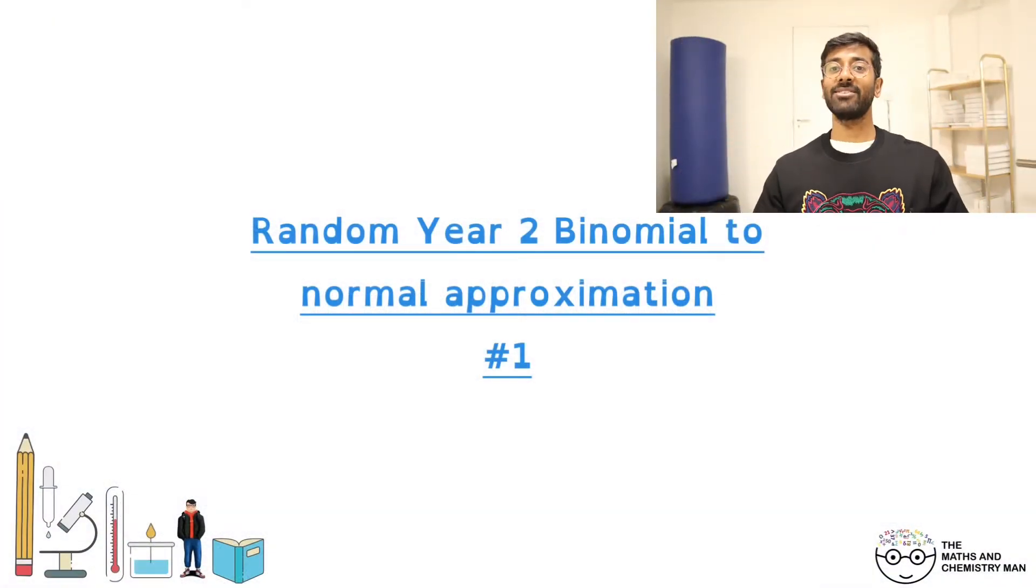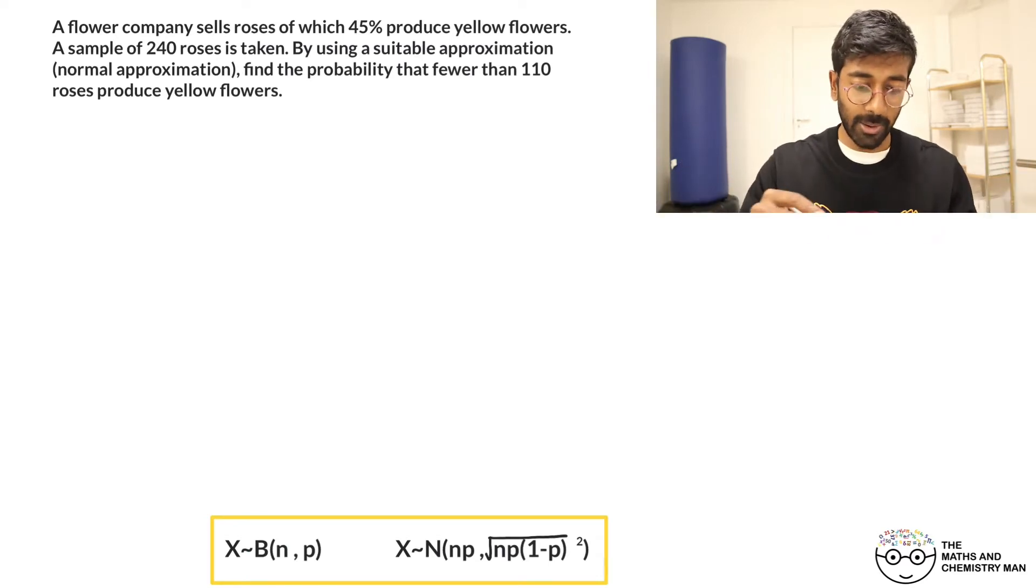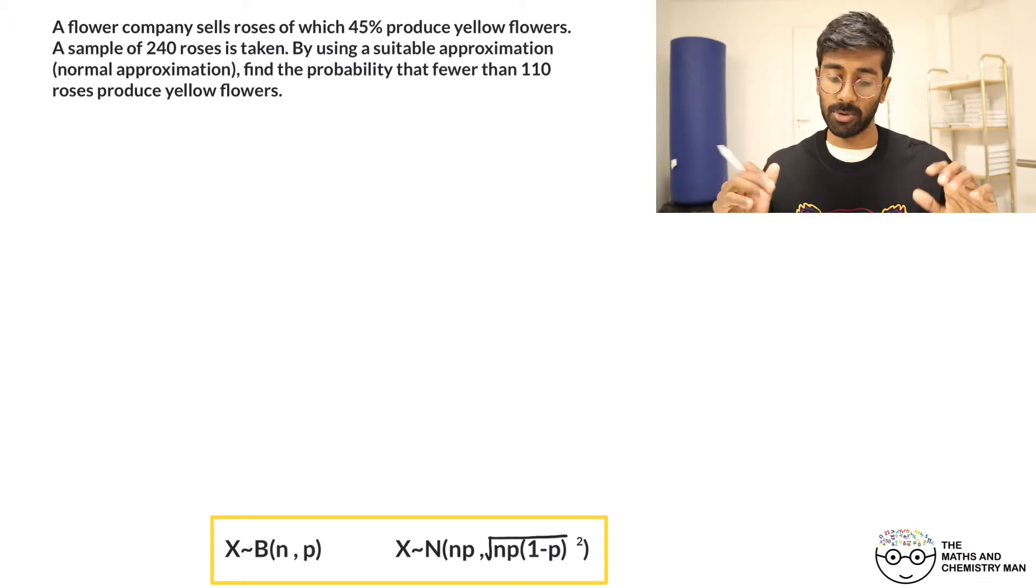We're back with another video, and today we're looking at approximating a binomial distribution to a normal distribution. Here is our question: A flower company sells roses of which 45% produce yellow flowers. A sample of 240 roses is taken. By using a suitable approximation, the normal approximation, find the probability that fewer than 110 roses produce yellow flowers. There's some useful info down the bottom there you might want to check that out, but jot this all down and we'll catch up in a couple seconds to go through the solution.